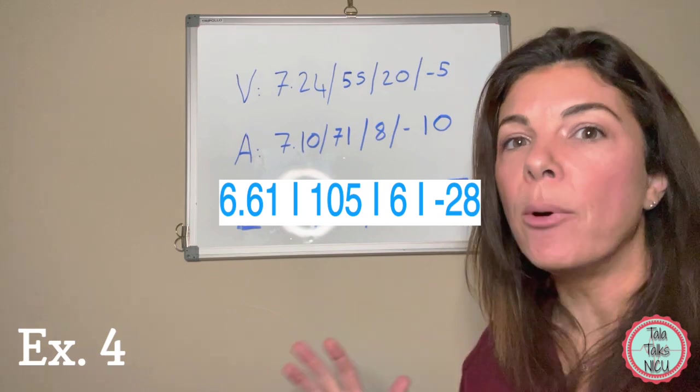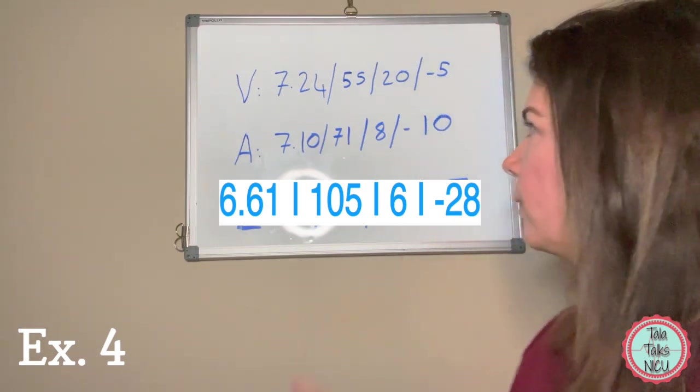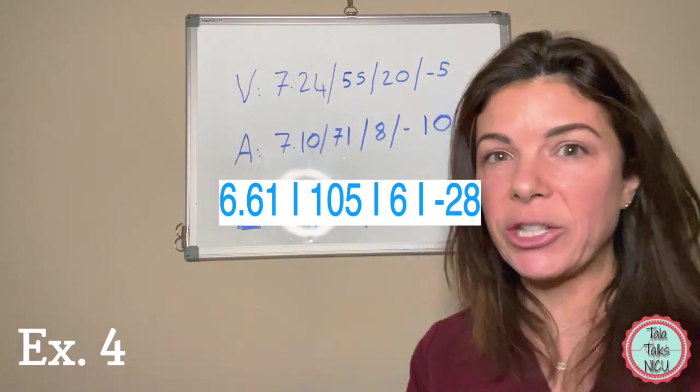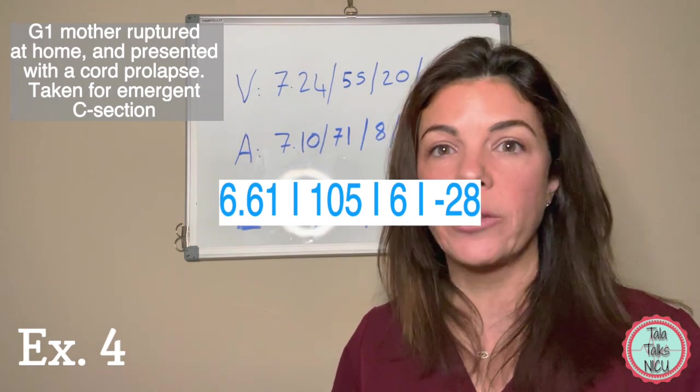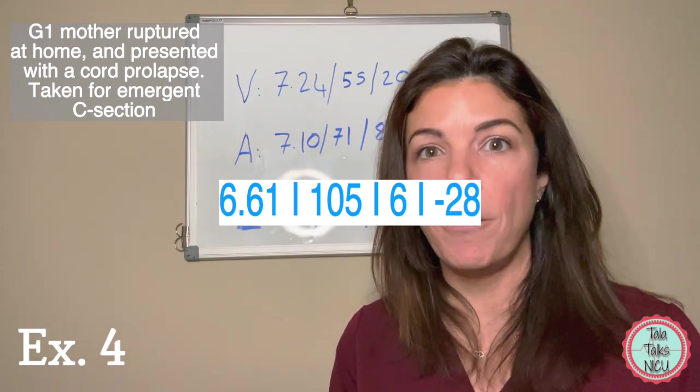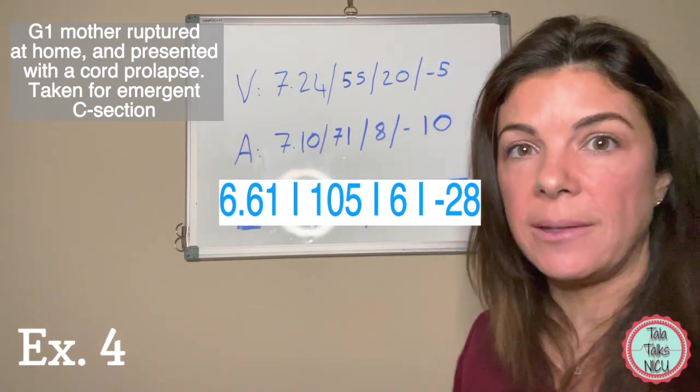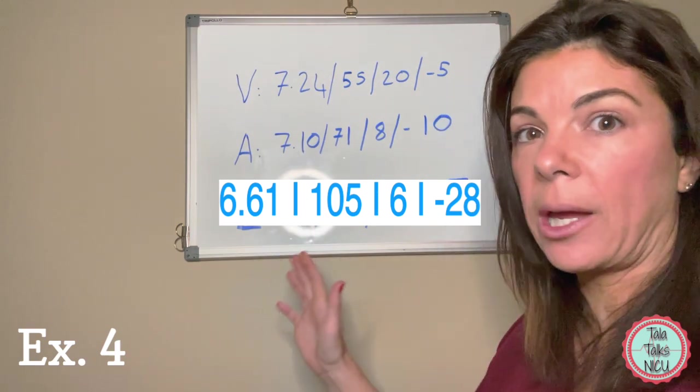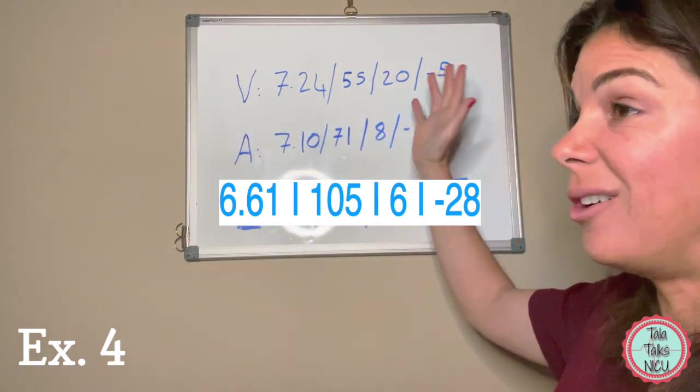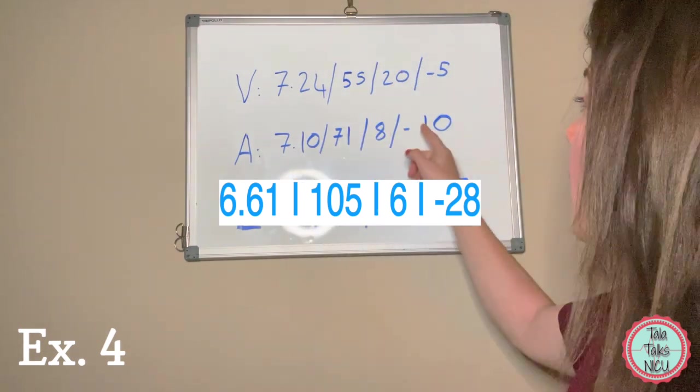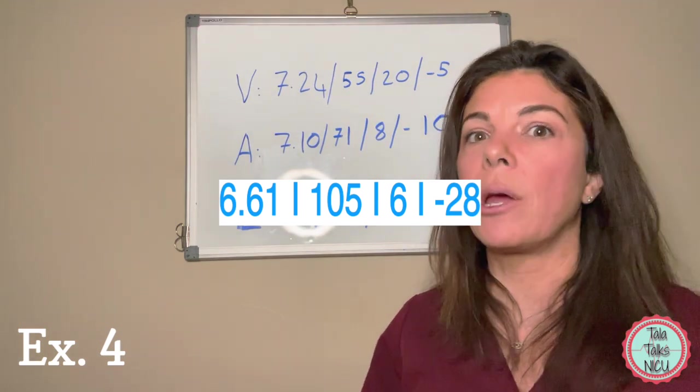Example number 4: this is a really important concept that I'm about to go over, so just really pay attention here. Let's go over this scenario and I'm actually going to give you a little bit of history with this. A mother who was in labor, full term, ruptured at home and then had a cord prolapse. Rushed into the hospital and was taken for an emergency C-section.